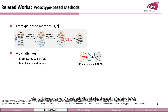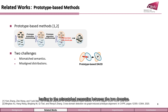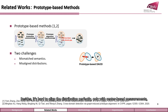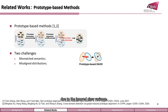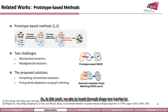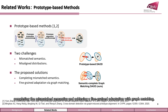However, the prototypes are not tractable for the missing classes in a training batch, leading to mismatched semantics between the two domains. Besides, it's hard to align the distribution perfectly with only center-based measurements due to the ignorance of class barriers. So in this work, we aim to break through these two barriers by completing the mismatched semantics and achieving a fine-grained adaptation with graph matching.